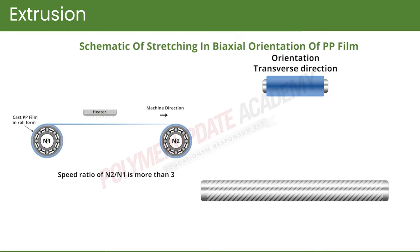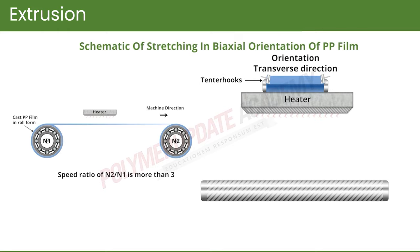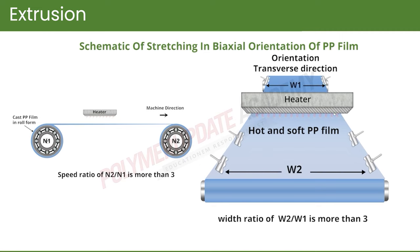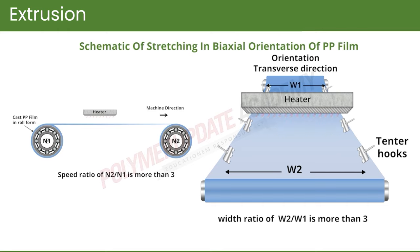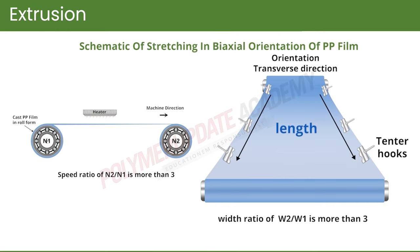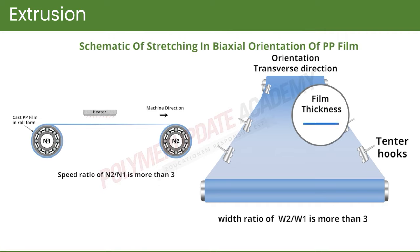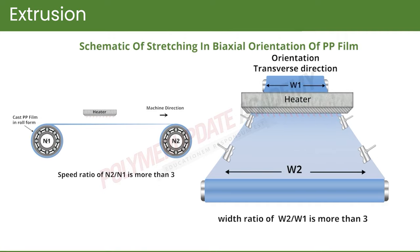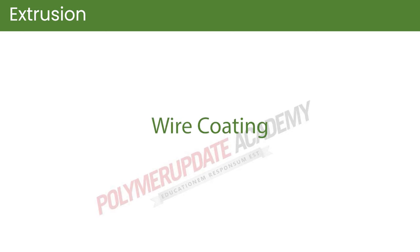For transverse direction orientation, the film is again unwound and subjected to stenter hooks from both sides. It is stretched in the transverse direction so that the width of the film increases — again by a factor of three or so. Both ways the film reduces its thickness: first the length increases, then the width increases. During this process, polymer molecules get oriented in the machine direction in the first process and in the transverse direction in the second. This enhances the barrier properties and mechanical properties of the film. Therefore, BOPP is used to produce films of superior quality and very thin thickness.